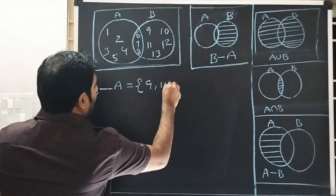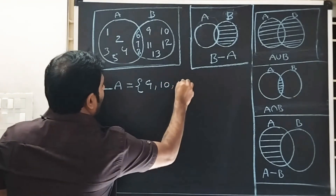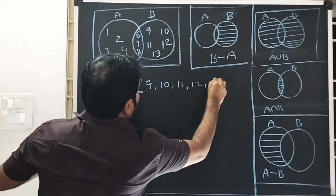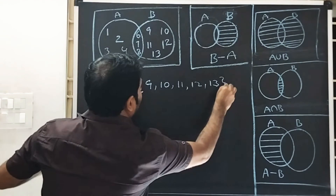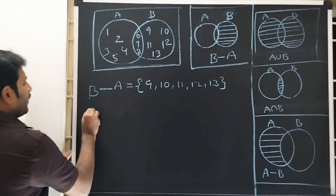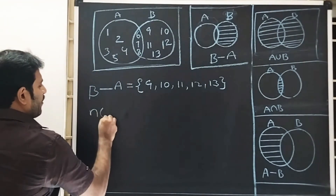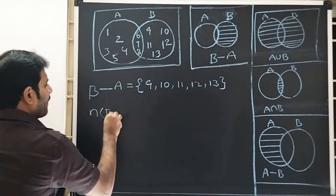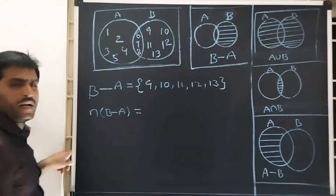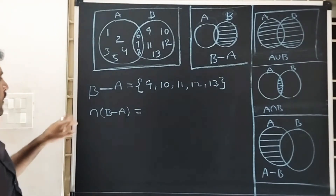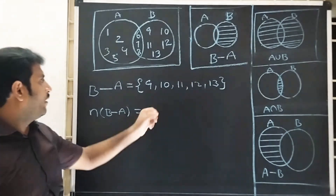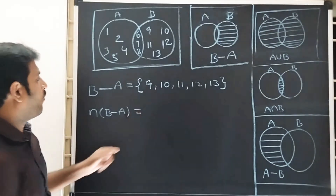The elements are 9, 10, 11, 12, 13. N of B minus A — how many elements are there? Here are five elements.